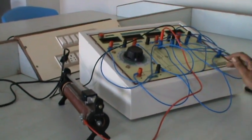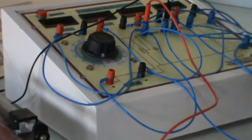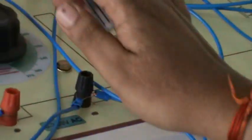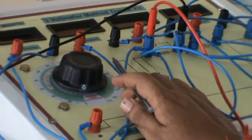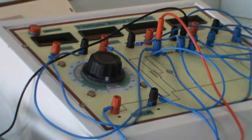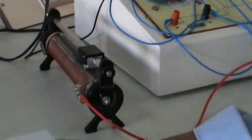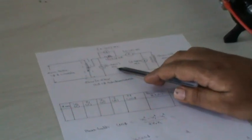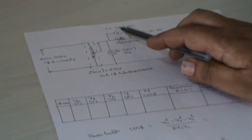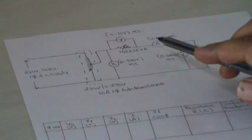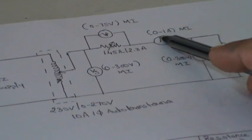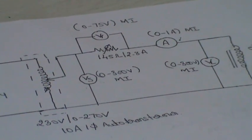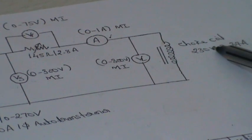We have set up a circuit — this is a Vasundara technology setup. The circuit is already rigged and we are using voltmeters. This is Vs, supply voltage, 0 to 300 volt, moving iron. This is Vr, 0 to 75 volt, moving iron. This is an ammeter, 0 to 1 amp, moving iron. This is the Choke Coil whose inductance we need to calculate.